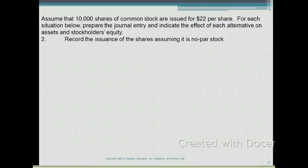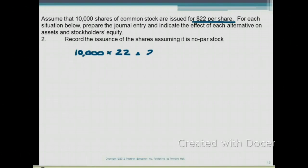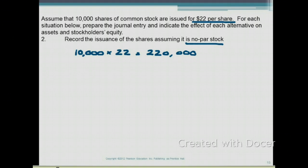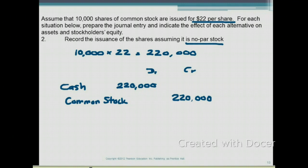Now let's look at issuing stock with no par value. Assume 10,000 shares of common stock are issued for $22 per share. Record the issuance assuming it's no par stock. Cash received is 10,000 times $22, which is $220,000. When stock has no par value, the entire amount is credited to the common stock account. So the journal entry is: debit cash $220,000, credit common stock $220,000. Assets increased by $220,000 and stockholders' equity also increased by $220,000.